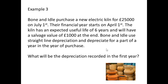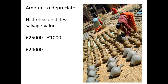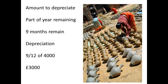What will be the depreciation recorded in the first year? The amount to depreciate is historical cost minus the salvage value: 25,000 minus 1,000 is £24,000. The part of the year remaining is 9 months. For each of the 6 years the annual charge would be £4,000. So the depreciation is 9/12 of 4,000, which comes to £3,000.